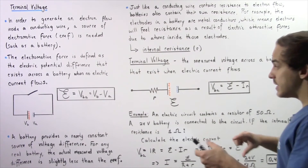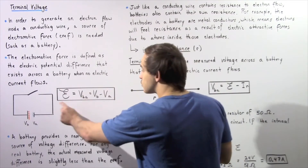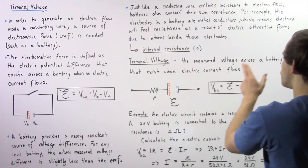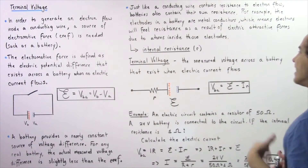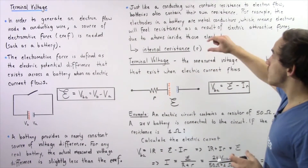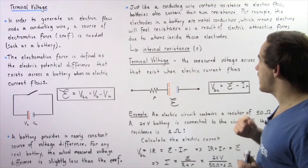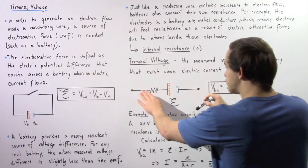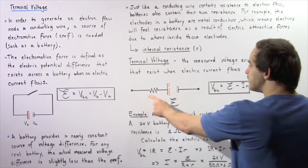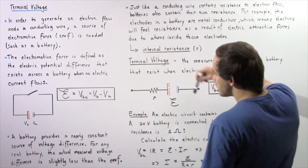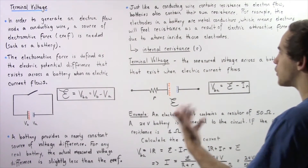We define this voltage, which is slightly less than the electromotive force, as the terminal voltage. The terminal voltage is the measured voltage across a battery that exists when electric current does in fact flow through our closed circuit. We give this resistance found inside the battery a special name: the internal resistance of the battery, given by lowercase r. On a diagram, we draw the internal resistance right next to the positive terminal of the battery and label it with lowercase r.